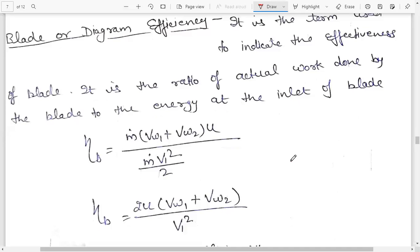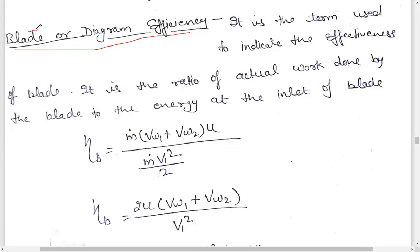Hello everyone. In this lecture, we will discuss the different types of efficiencies used in the impulse turbine. First of all, let's see blade or diagram efficiency. Blade efficiency — why are we talking about efficiency? It is output upon input, so we are talking about that efficiency.